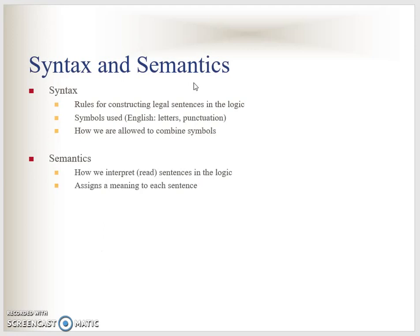The syntax and semantics: syntax is the symbols that we use. For example, in English and Malay we have letters; in Arabic we have the alphabets — alif ba ta, jawi — and we are allowed to combine the symbols to form sentences and words. Semantics is the meaning. Some people will read or understand the same sentence differently, so we have to create good sentences so that everybody understands the similar meaning.